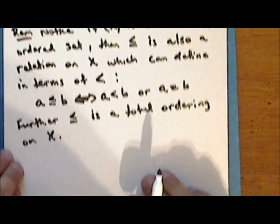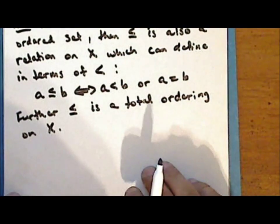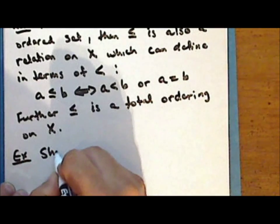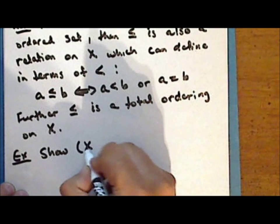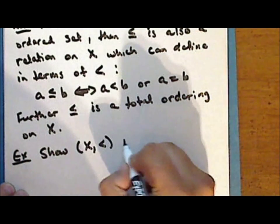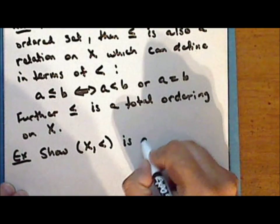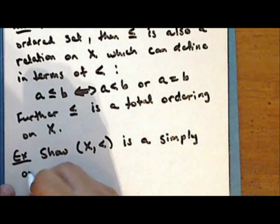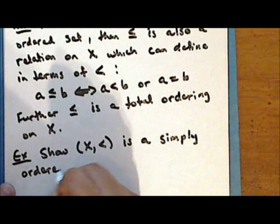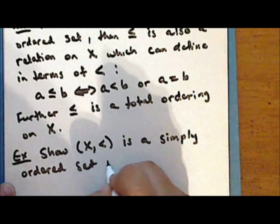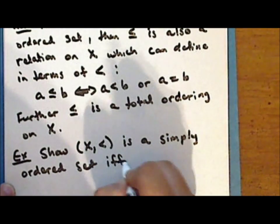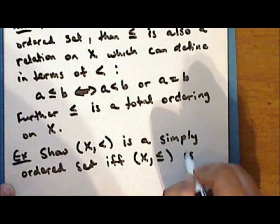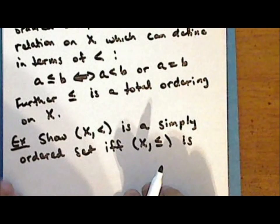We can actually prove a stronger result. As an exercise, show that the set X together with the relation less than is a simply ordered set if and only if the set X together with the relation less than or equal to is a totally ordered set.